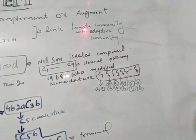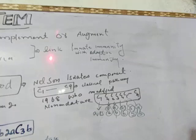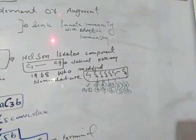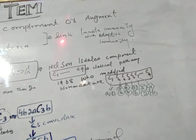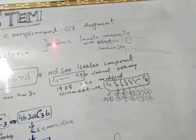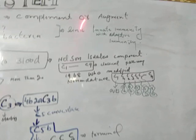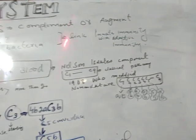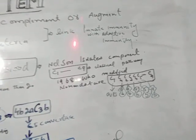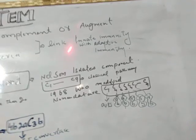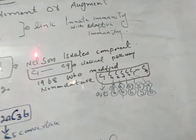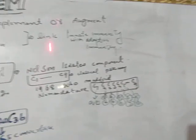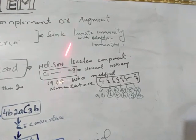The complement system is a linkage — it links the innate immunity system with the adaptive immunity system. If the question arises whether it belongs to the innate or adaptive immunity, the answer is that it is part of both. The complement system is a part of adaptive as well as innate immunity defense.